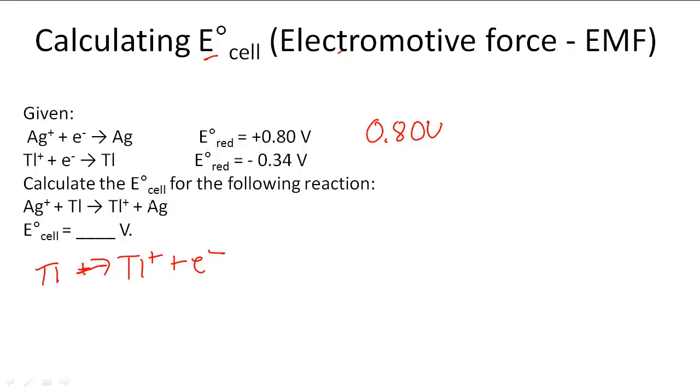Notice that it matches up with what we have here if we were to add those half reactions together. Now its oxidation potential is positive because we switched it around, so it's going to become 0.34 voltage.